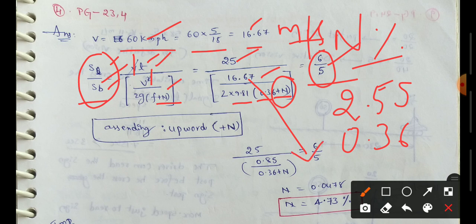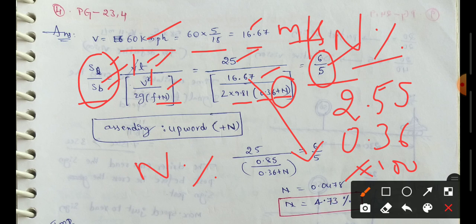The total computed value of n is 0.0478. In percentages, the gradient value is therefore 4.73 percent. So the ascending gradient is equal to 4.73 percent. The n value is confirmed from the lag to brake distance ratio as given.